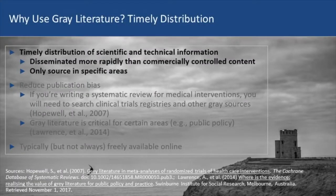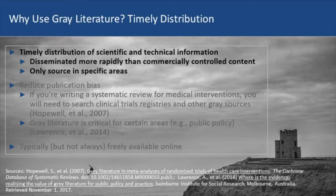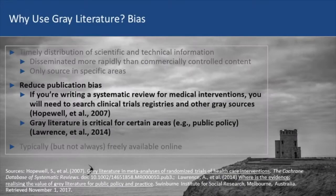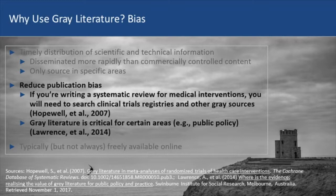So why would you use gray literature? Many times the production of a gray literature report is faster than a journal article, so you'll get more current information. Because of fewer constraints on page numbers, you may find greater depth of technical and scientific information. In some cases it may be the only source available. If you're doing large studies like a systematic review of a medical intervention, current standards require you to search some gray literature sources to reduce publication bias. Hopewell et al. was one research study that demonstrated the impact of including trials found in the gray literature on the final results of systematic reviews.